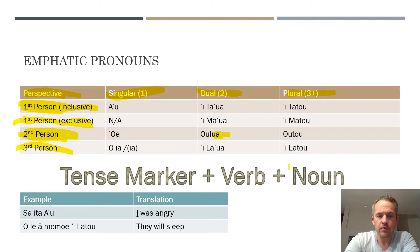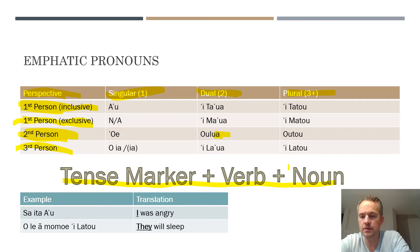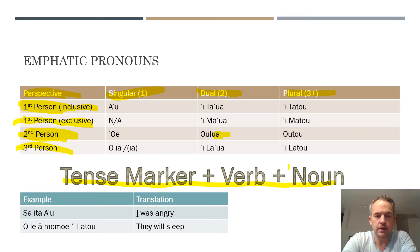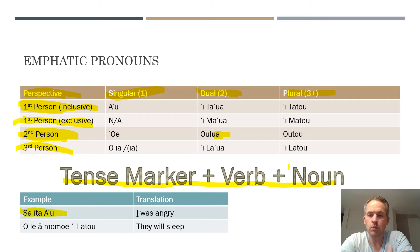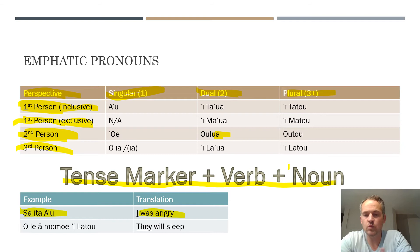The sentence structure for emphatic pronouns is the same as for regular nouns: tense marker plus the verb plus a noun. For example, the first sentence is ua ita au. Ua is the past tense marker, ita is the Samoan verb for 'angry' — which functions as a verb in Samoan — and au is the first person singular pronoun. This translates to 'I was angry,' with emphasis on 'I.'